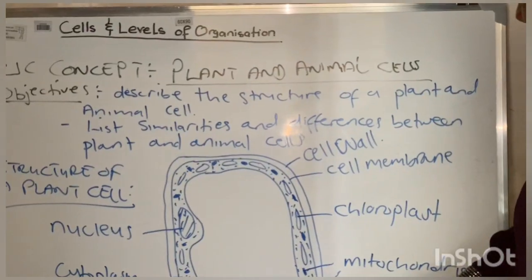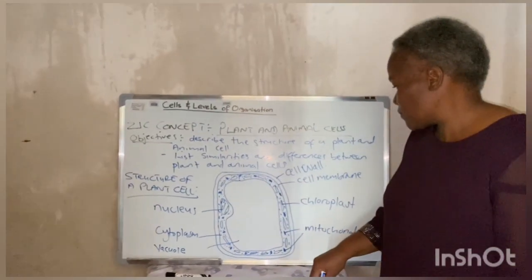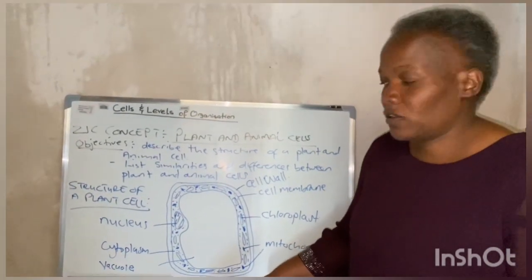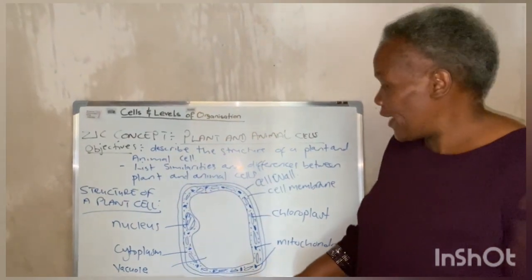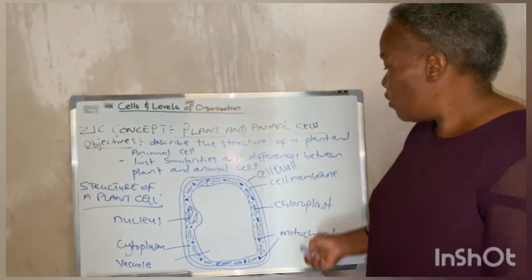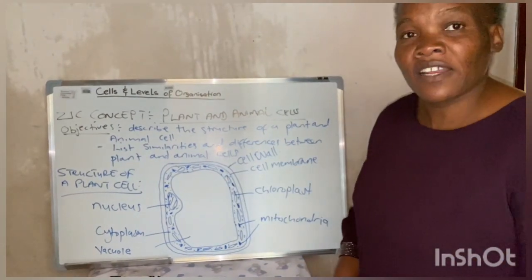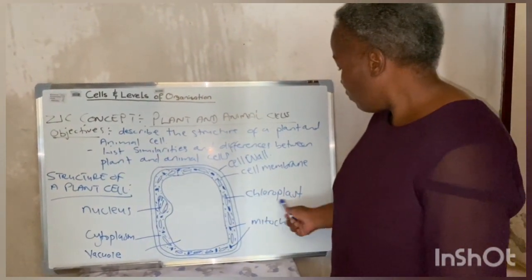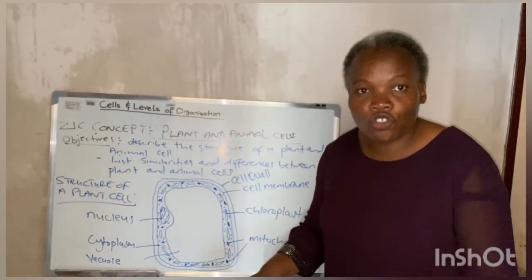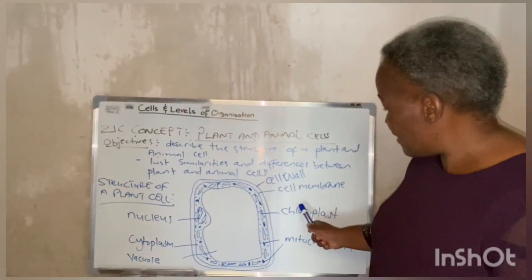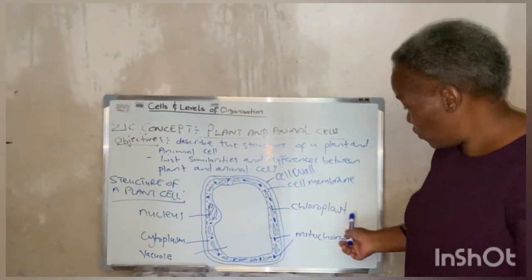The chloroplast is an organelle which is found mostly in plant cells. It contains a green pigment called chlorophyll, and chlorophyll is responsible for the absorption of sunlight which is required for the process of making food. Plants make their food in the chloroplasts, so we can say the chloroplasts are the factory or the manufacturing plant of a plant. Plants make their own food using a process called photosynthesis, and this food is essential for all living organisms.